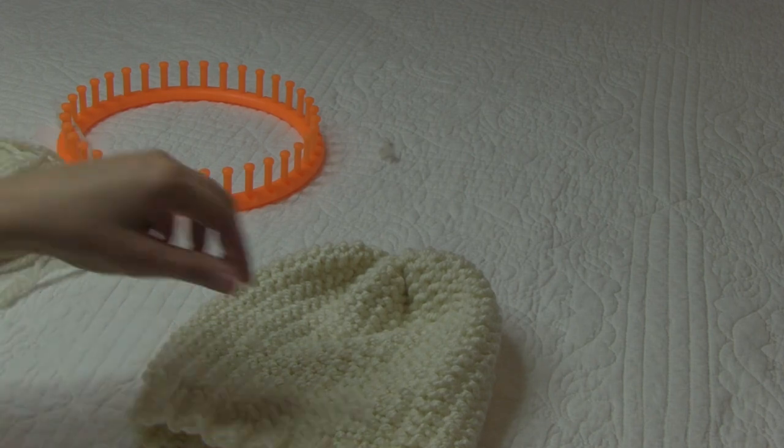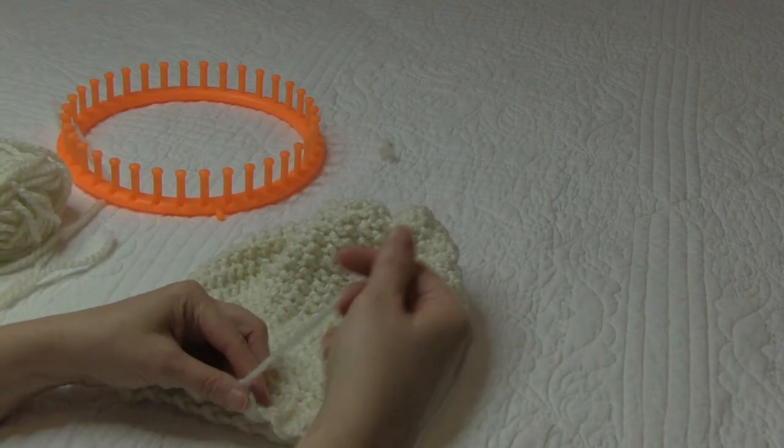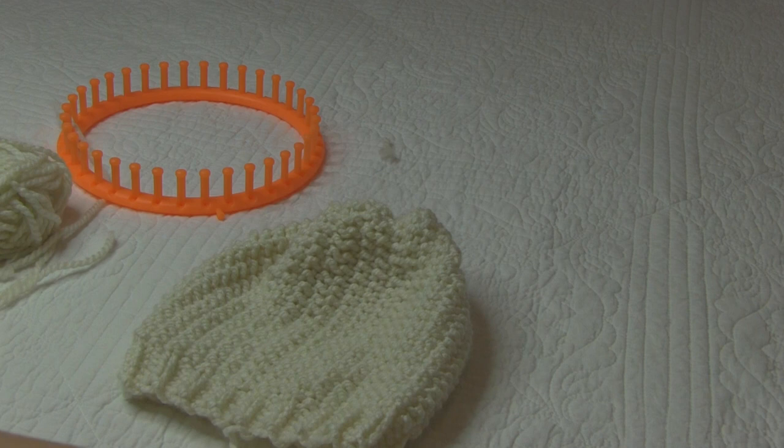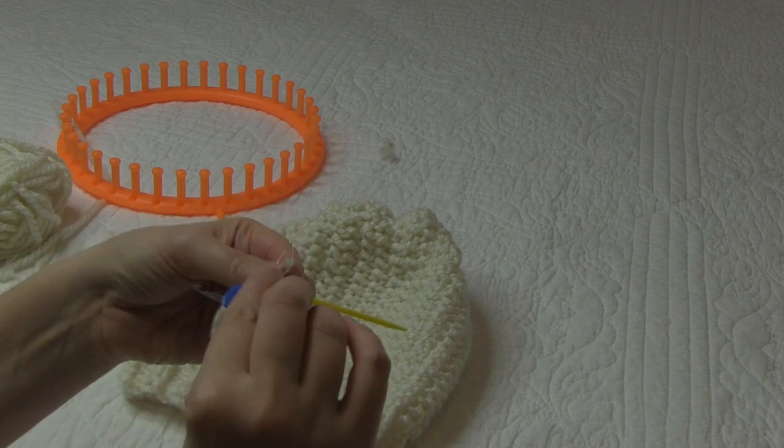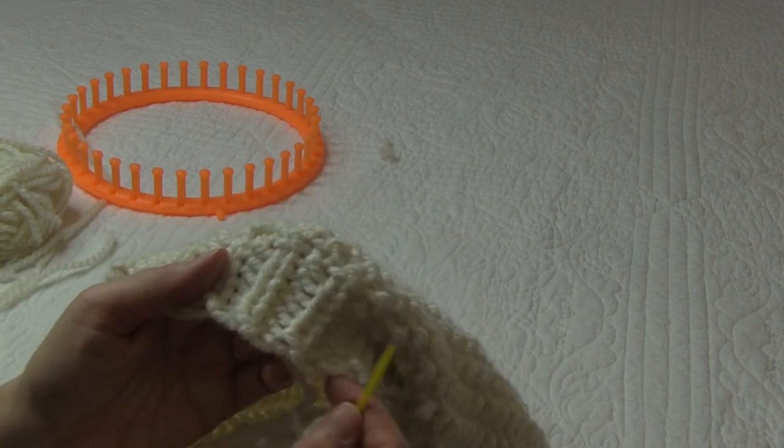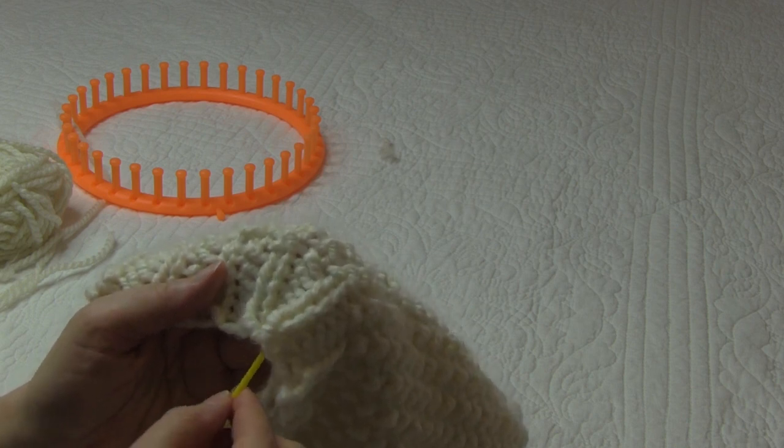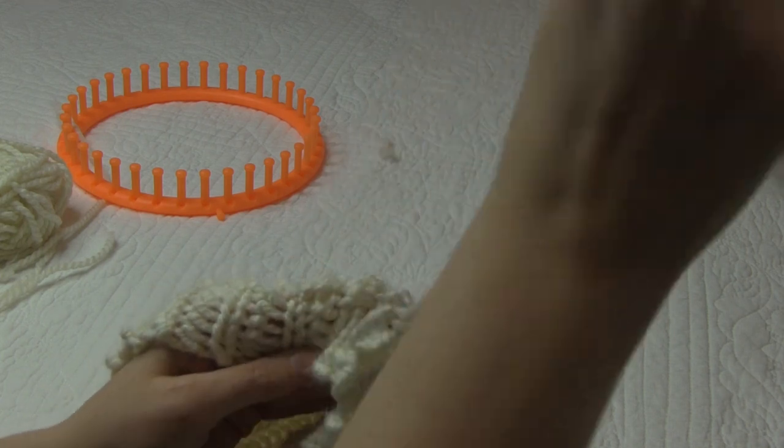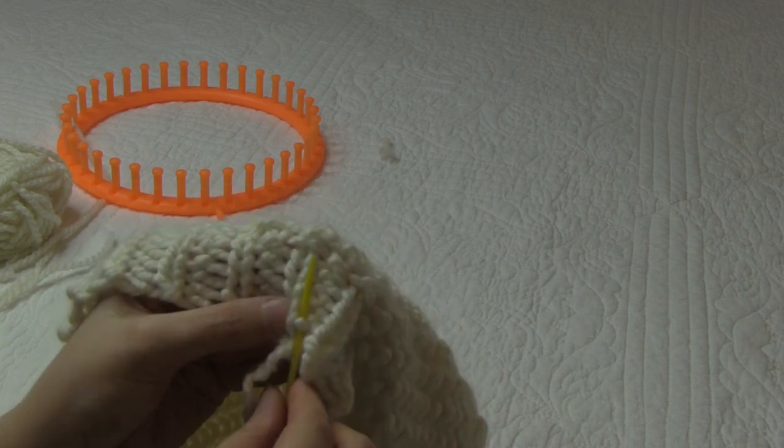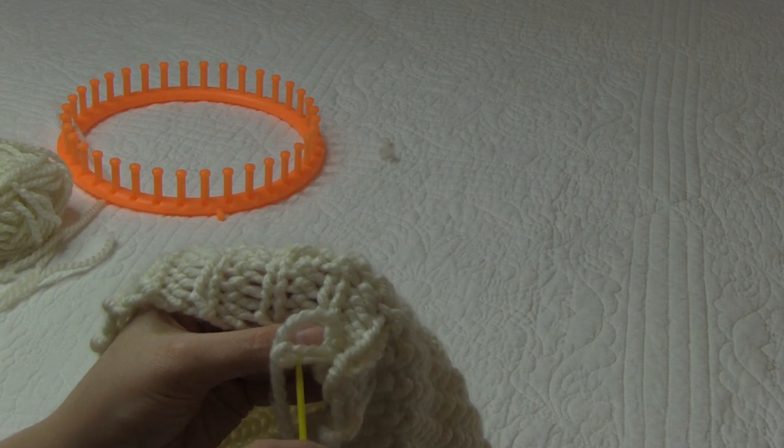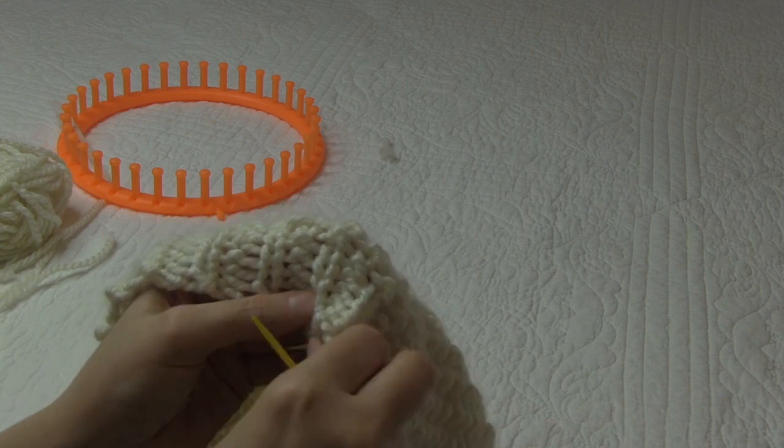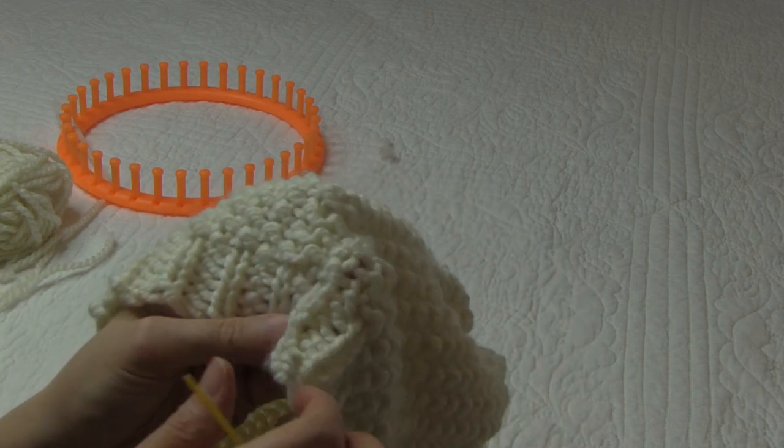Once we finish our drawstring bind off, we also want to weave in the yarn we started with from the beginning. I'm going to thread that onto my yarn needle, and I want to weave it in just a little bit away from the edge, and then I'm going to find a loop and secure it by making a knot, and then weave in my tail.